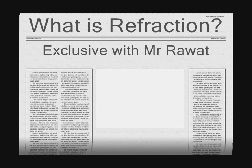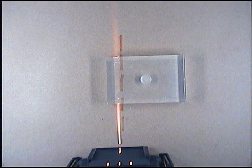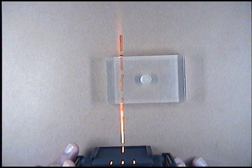Refraction is the bending of light as it slows down when it moves from one material to another. If a light ray hits the surface of the block at an angle of zero degrees to the normal, the light ray travels through the block in a straight line.